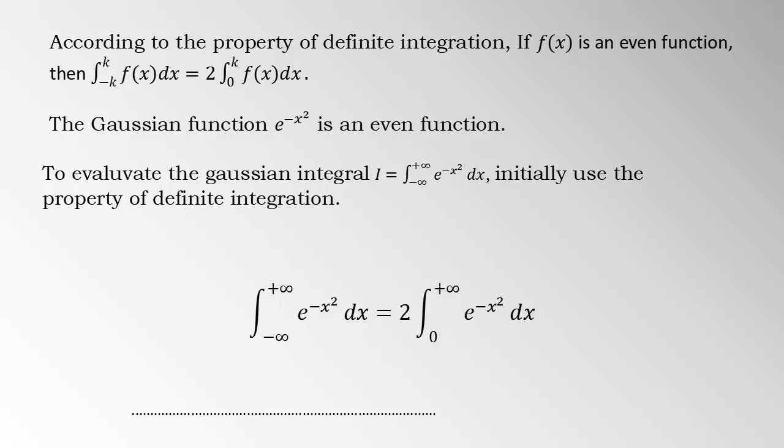To evaluate the Gaussian integral, I equals integral negative infinity to positive infinity e raised negative x square dx, initially use the property of definite integration.